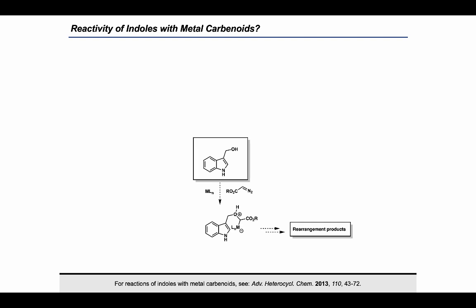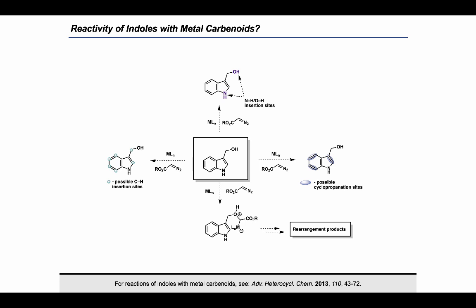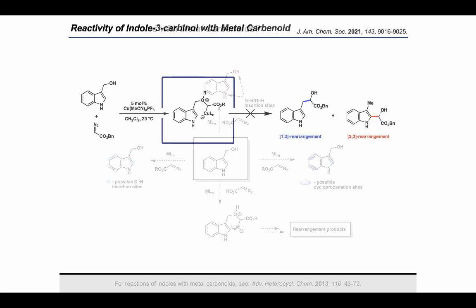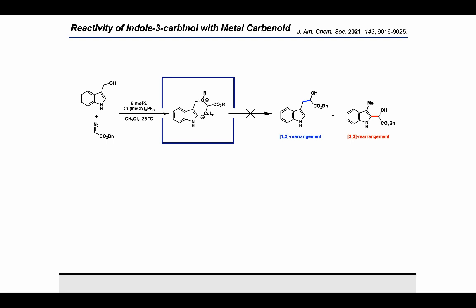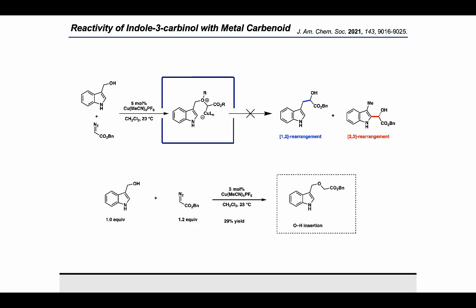Ideally, that's what we envisioned doing, but there are a couple of other competing pathways that can happen here considering the reactivity of indole with metal carbenes that's been well studied. For example, diazo compounds can react with indoles to do C-H insertion or N-H or O-H insertions, as well as cyclopropanation on the indole ring. So selective formation of the ylide will be very important to get the desired reactivity. With that, we did our initial screening with indole-3-carbinol and a diazo ester in the presence of a copper catalyst that we previously used in our allylic iodonium ylide chemistry, but we did not observe any rearrangement products at all. Instead, we isolated the O-H insertion product, which seemed to be competing with the ylide formation and rearrangement.